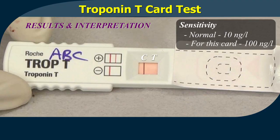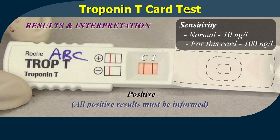Results and interpretation: The results of the troponin T rapid test are determined by the naked eye. A single red coloured line at the control area C, without a line at the test area, is a valid negative result and indicates the concentration of cardiac troponin T in the sample is below the cut-off level. Appearance of a red coloured line at the control area C and a red coloured line at the test line indicates the concentration of cardiac troponin T in the sample is at or above the cut-off level. The intensity of red colour in the test line may be weaker or stronger than that in the control line.